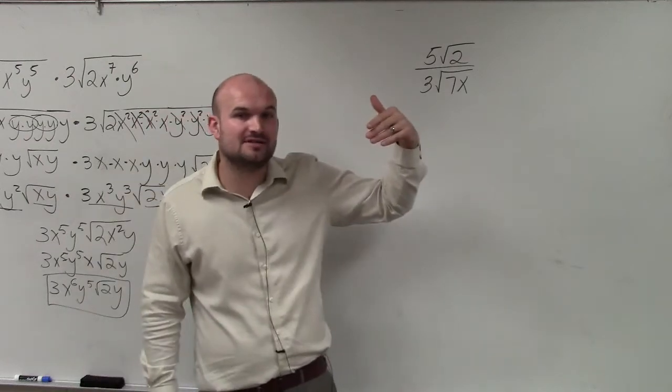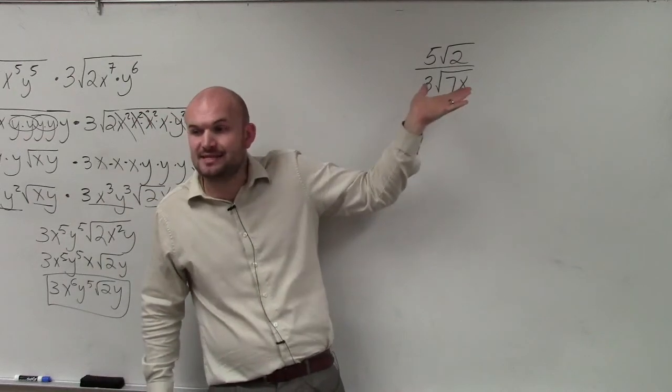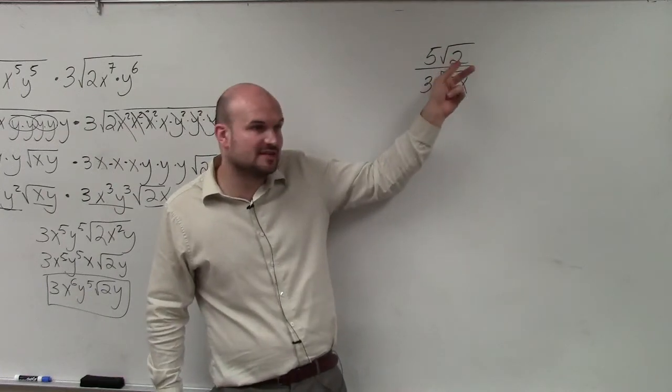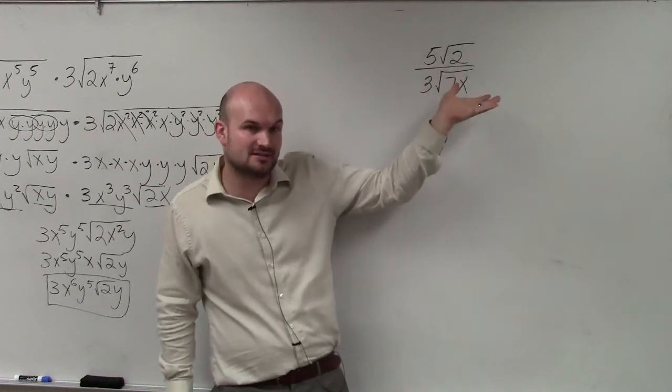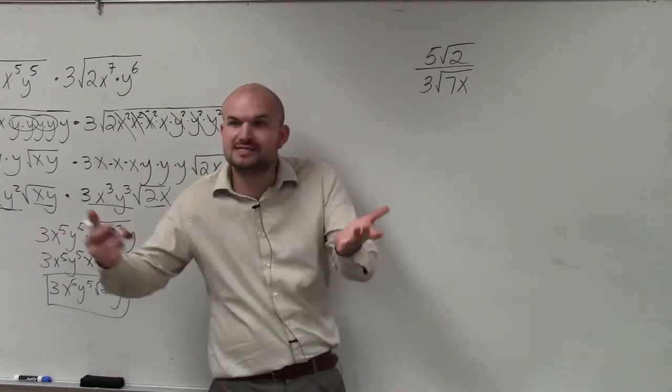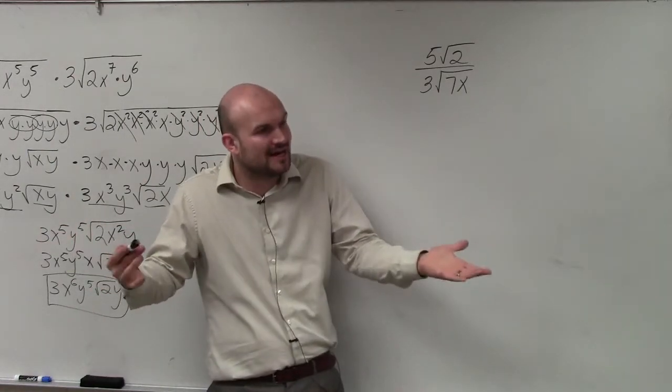But the problem comes in is when you guys look at this, we can't simply go ahead and divide these. Because 7 doesn't evenly divide the 2, and there's nothing for x to be on this. So I can't simplify this anyway. So what are the other ways that we can still try to simplify this problem? Because I can't simplify it by dividing.